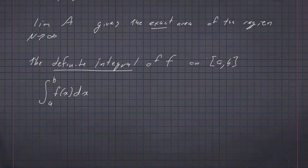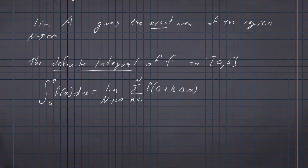And again, we define this as the limit as n goes to infinity of the sum, k goes from 1 to n, of f of a plus k delta x times delta x, and then we had delta x over 2 times f of a minus f of b.